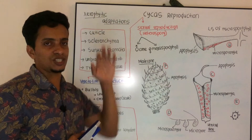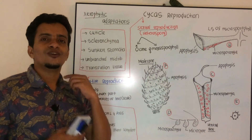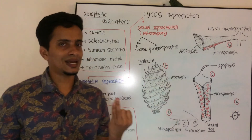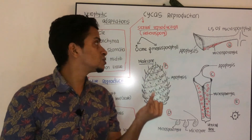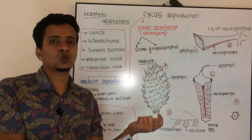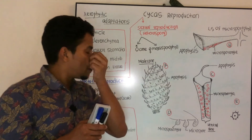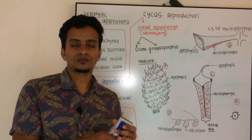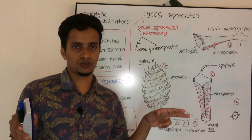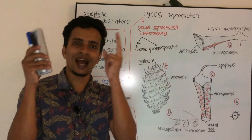When bulbils get detached from the parent plant, they regenerate the whole thallus — that is vegetative reproduction by bulbils. Coming to sexual reproduction, Cycas produces two types of spores: microspores and megaspores. Microspores are produced on microsporophylls and megaspores on megasporophylls. The male plant produces male reproductive structures and the female plant produces female reproductive structures, but there is a major difference between them.